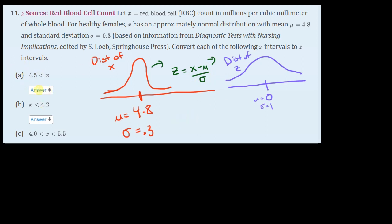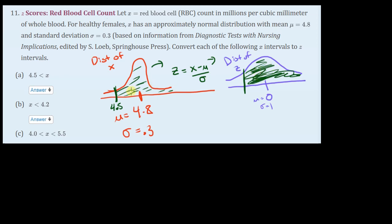So for part A, where is 4.5 on the distribution of X? It's somewhere below 4.8, so it's down here — 4.5. It looks like the way they've written this, basically it says X is more than 4.5, so that's more than over this side, this area to the right of 4.5. There's a corresponding 4.5 in this distribution of Z. This area marked in green is exactly the same as this area marked over here in green.